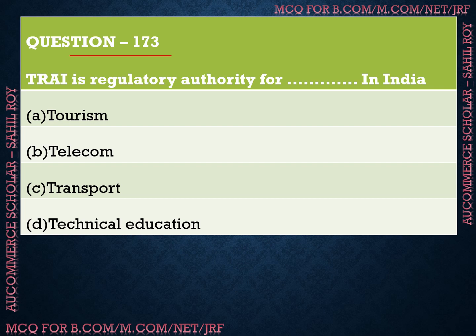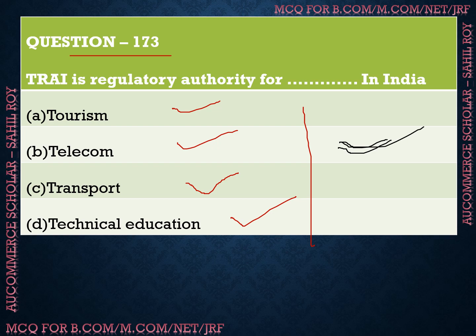Question number 173: TRAI is the regulatory authority for dash in India. Option A is tourism, Option B is telecom, Option C is transport, and Option D is technical education. The correct answer is Option B — telecom. TRAI stands for Telecom Regulatory Authority of India.